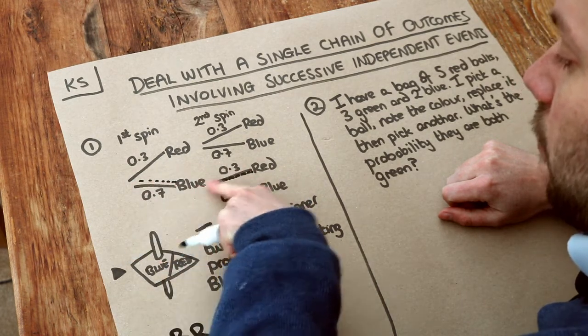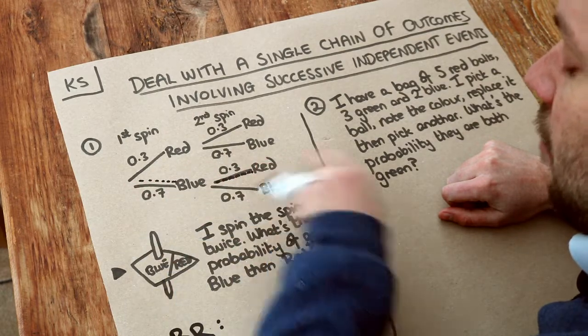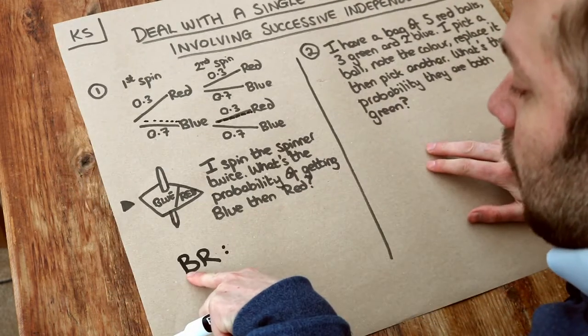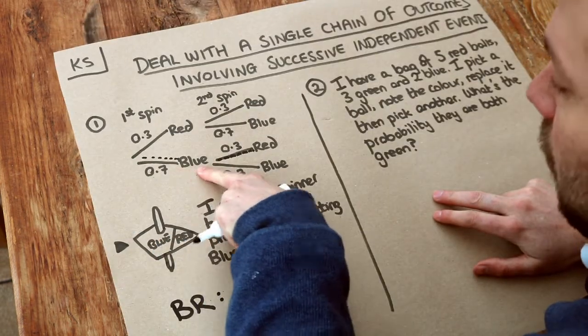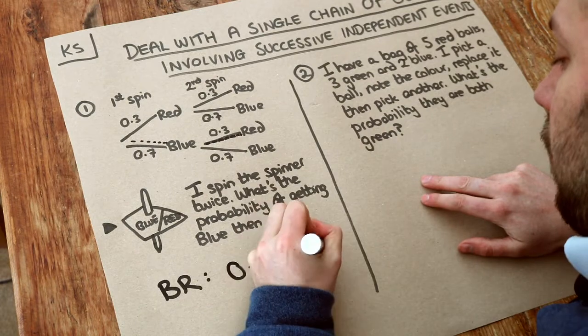So we're going to follow the correct path through this tree, blue then red from left to right. So the probability of getting blue is 0.7, and then if we follow the blue, the probability of getting red on the second spin is 0.3.